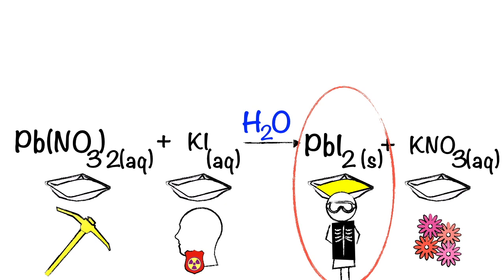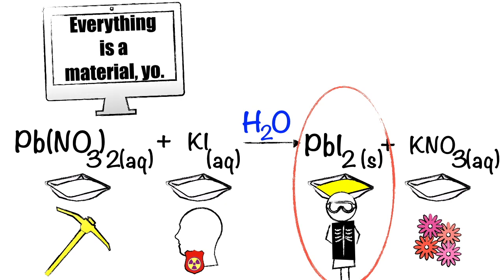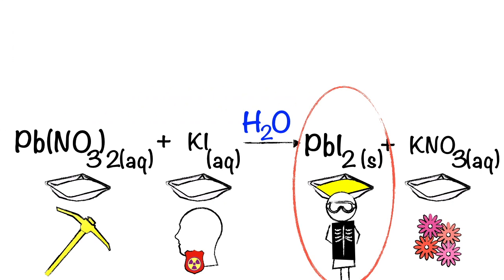This one example can be extrapolated to all of chemistry, because all chemistry is, is the study of transforming one material into another to make stuff that literally wasn't there before. This reaction is the main way lead iodide is made, so it's really important that we can balance it so that we produce the right amount of product at a given time.